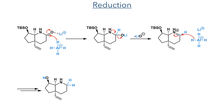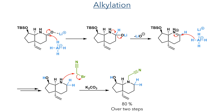Taking this forward, the lactam was then reduced using LiAlH4. The lithium coordinates to the oxygen making it more electrophilic, and a hydride then undergoes nucleophilic addition, forming a hemiaminal intermediate. Electron donation from the nitrogen lone pair allows for the elimination of the lithium oxide. This forms an iminium intermediate that is then attacked by LiAlH4, reducing it to form the saturated piperidine ring. The TBS group was also lost during this reaction, revealing the deprotected alcohol. The amine was then selectively alkylated using bromoacetonitrile and potassium carbonate to deliver the tertiary amine in an 80% yield over two steps.